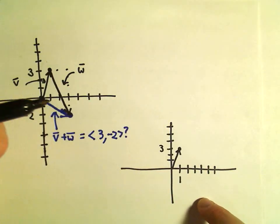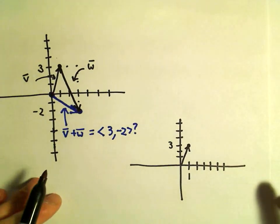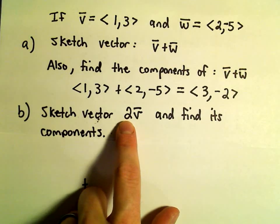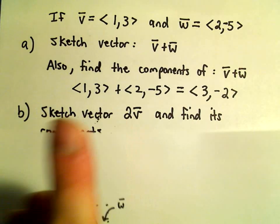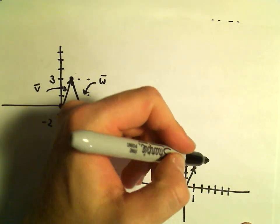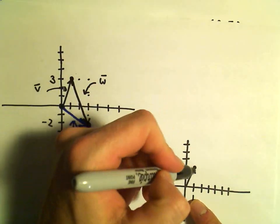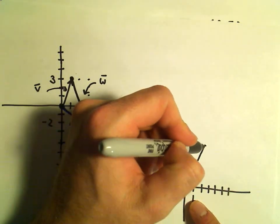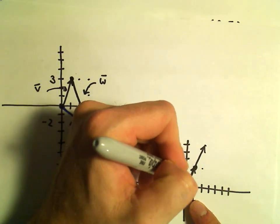When you multiply a vector by a positive whole number, all it does is it stretches it out by that factor. So since we're multiplying by 2, you basically can stick another vector v at the end that would have components, again, you would move over 1 and up 3. It's just going to stretch that original vector out by a factor of 2.